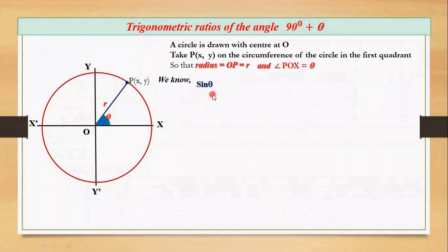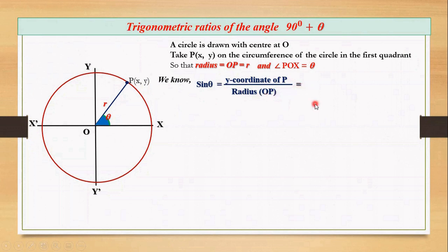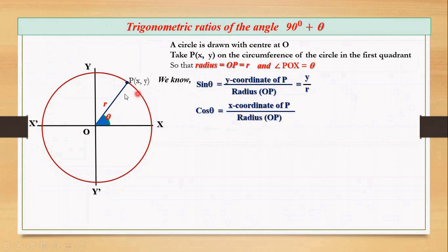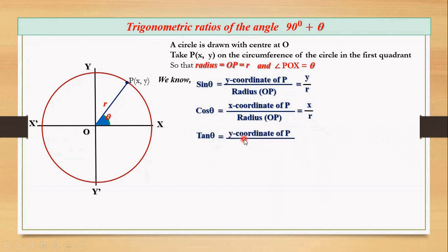In our previous class we defined sine theta as the ratio of the y coordinate of the point to the radius. Here y coordinate of the point is y and radius is r, so we write y by r. Similarly, cos theta is the ratio of x coordinate of the point to the radius, so we write x by r. The third ratio, tan theta, is the ratio of the y coordinate to the x coordinate, so we write y by x.